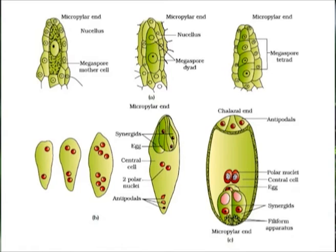The female gametophyte, also called the embryo sac, develops from the functional megaspore. The functional megaspore undergoes one or more rounds of mitosis without cytokinesis, resulting in a multinucleate cell. Later, cell walls form around these nuclei resulting in a cellularized female gametophyte. In the Polygonum type pattern, a single nucleus undergoes two rounds of mitosis producing a four-nucleate cell with two nuclei at each pole. During the third mitosis, cell plates form between sister and non-sister nuclei, leading to cellularization.